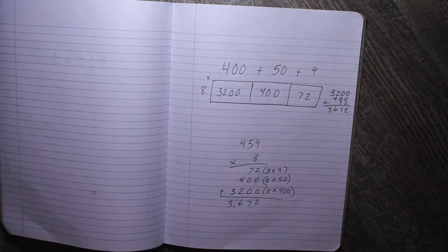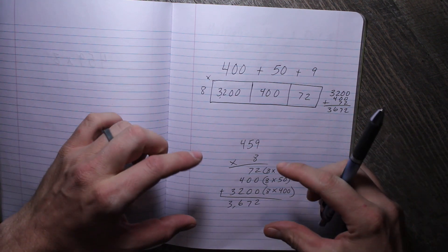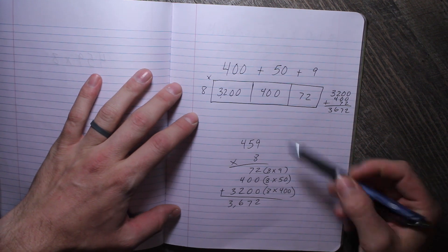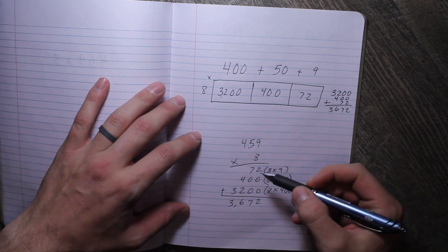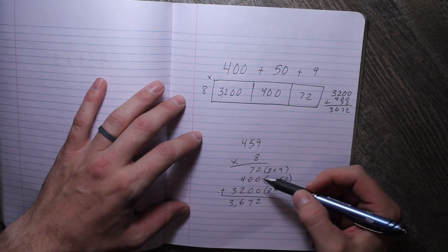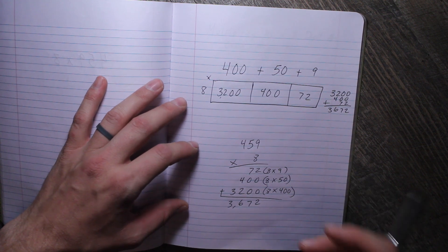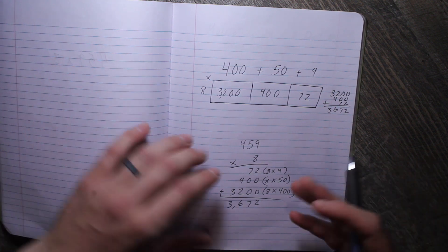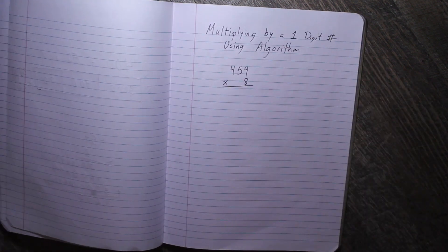So what we're going to talk about today is the algorithm: how we can take these steps and compress them. So it's basically the same thing, except instead of multiplying all of them and then adding, we are going to multiply and add together—we're going to combine it.